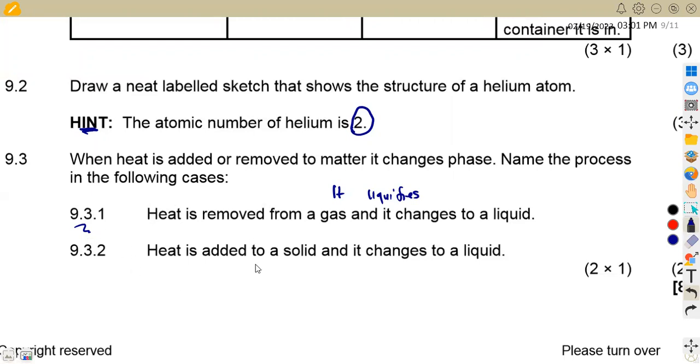Heat is added to a solid and it changes to a liquid. This is a melting process. It melts. The matter is going to melt when dealing with solid to liquid by adding heat.